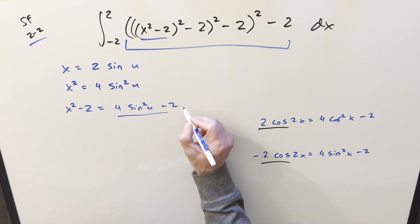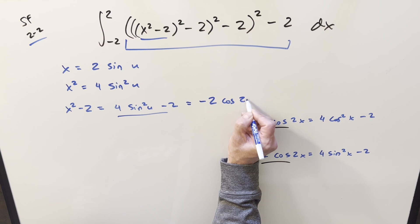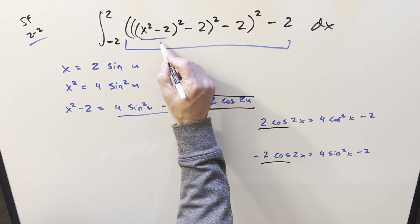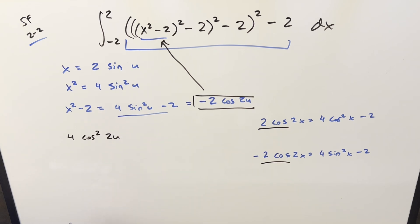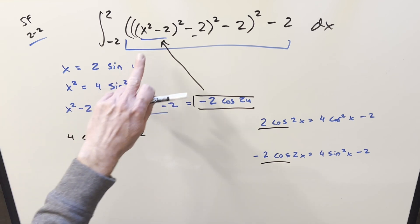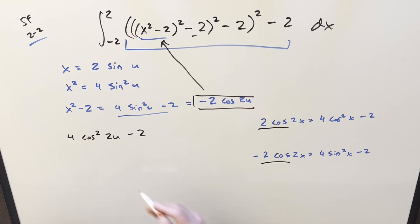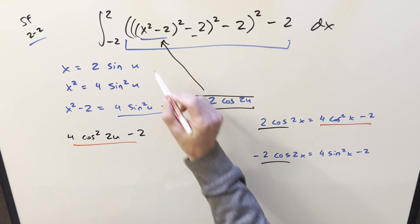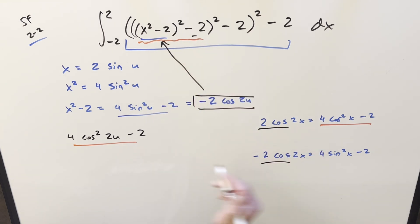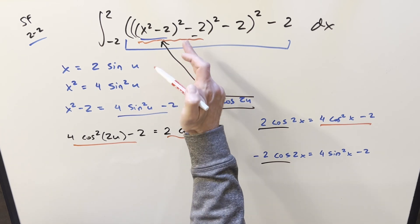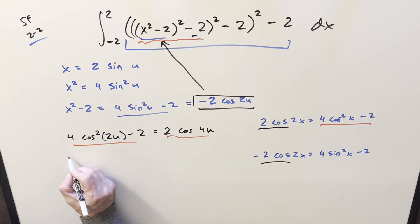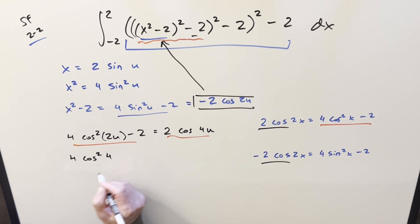Now four sine squared u minus two is the same as minus two cosine 2u. If I plug that back in and square it again, we get four cosine squared 2u, then bring in the minus two. This is in the same form as before, so that becomes two cosine 4u. We square it again to get four cosine squared 4u, bring in minus two again — same form — giving two cosine 8u. Square it one more time to get four cosine squared 8u.